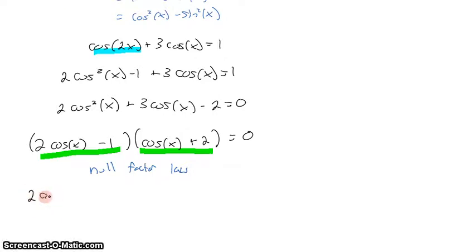That means that 2 cosine of X, take 1, has to be 0, and or cosine of X plus 2 has to be equal to 0.